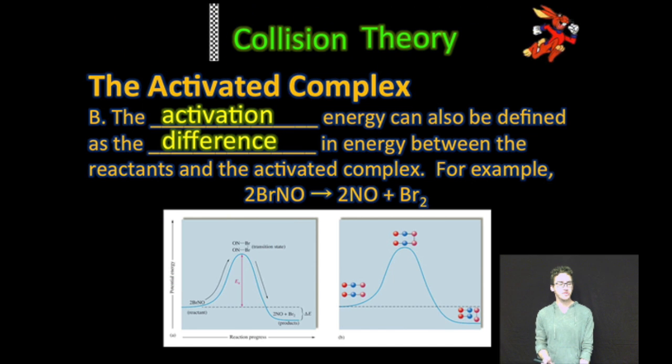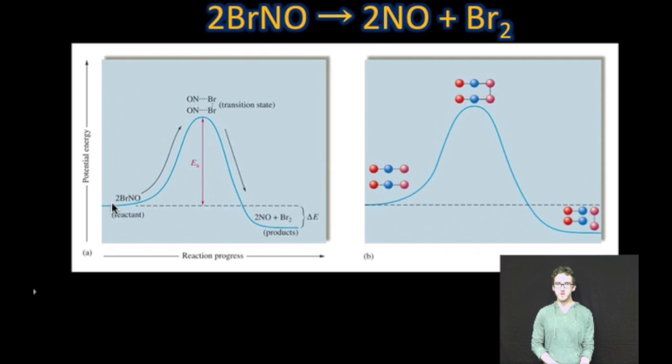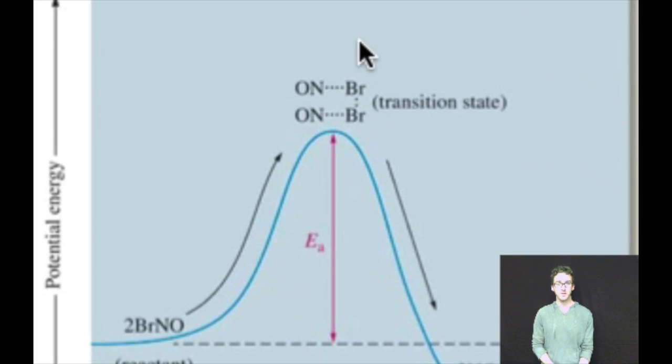Now take a look at the image on your screen and in your notes. You're provided with the energy profile for the reaction between two molecules of BRNO to form the products NO and bromine. The activated complex is represented here at the peak of your energy profile. It's here that the bonds between bromine and nitrogen begin to weaken and the bonds between the two atoms of bromine begin to form. Notice that those are represented by dashed or dotted lines.